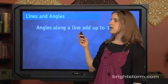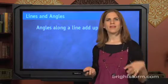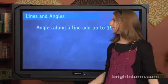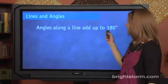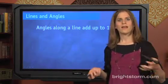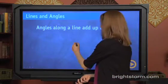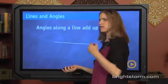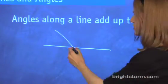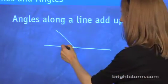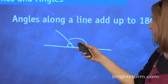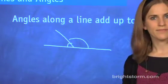Onto lines and angles. There are just a couple things that I want you to remember, and I'll just draw this out really quickly. Angles along a line add up to 180 degrees. You'll probably remember this from math class, but just in case — anytime you've got a line and you've got two or more angles on it, these angles are going to add up to 180. So for example, if this was 120, this angle here would be 60.